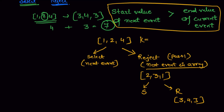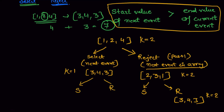Let's understand the value of k here. When we reject events without selecting any, k remains 2. Once we select event [1,2,4], k decrements to 1. When we then move to event [3,4,3] with k equal to 1, we have select and reject options. If we reject and there are no elements left, that case is not possible. If we select, k becomes 0 and we have reached the end of the array, so we return. Similarly, if we selected [2,3,1] with k equal to 2 and k decrements to 1, we cannot find any event with start value greater than 3, so we reach the end of the array and return.